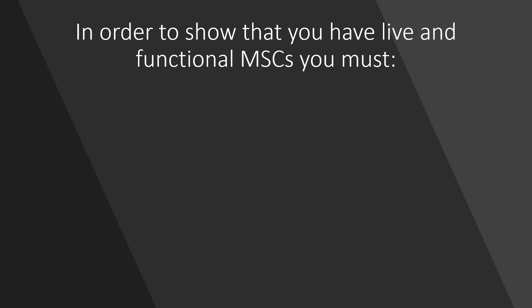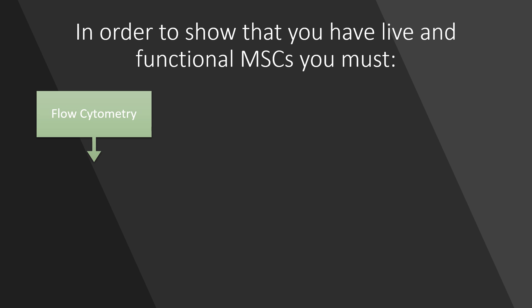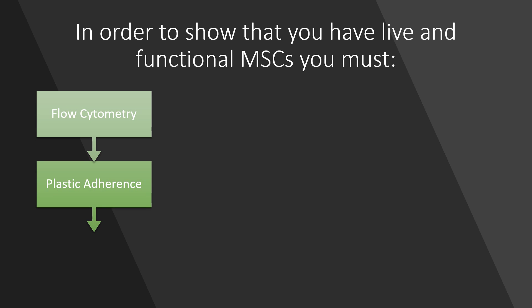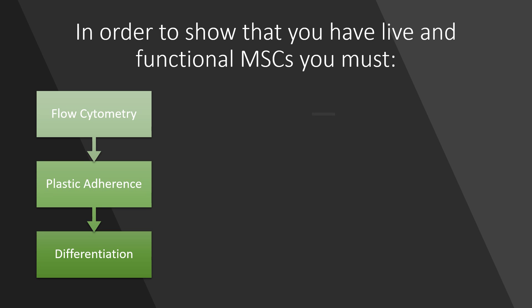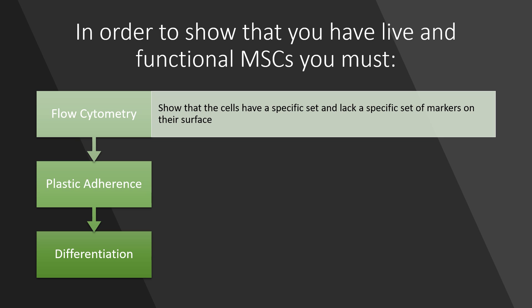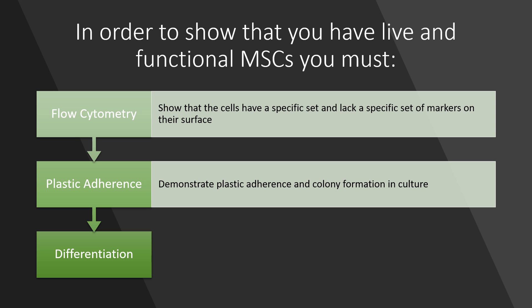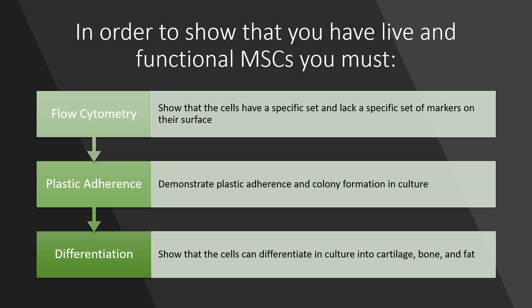In order to show that you have live and functional stem cells, you have to have flow cytometry data, plastic adherence and culture, and differentiation. For flow cytometry, you have to show that the cells have a specific subset of markers, both present and absent on their surface. You also have to demonstrate plastic adherence and colony formation in culture, and then show that the cells can differentiate in culture into cartilage, bone, and fat.